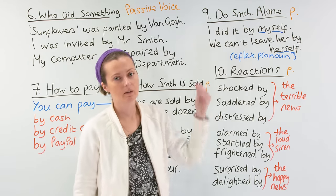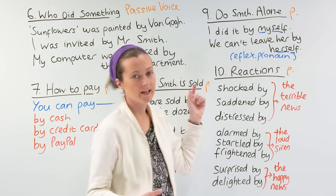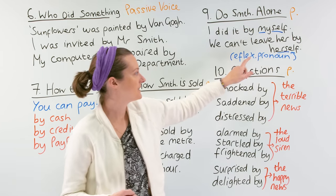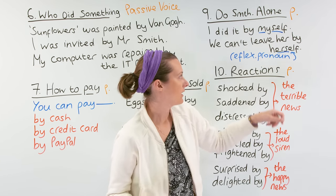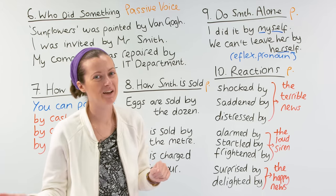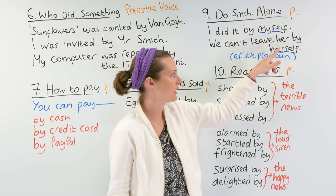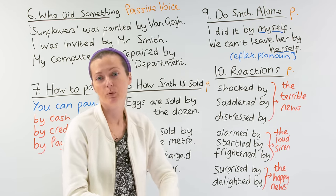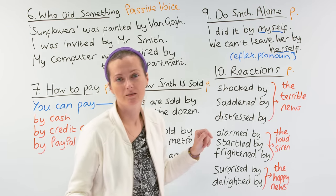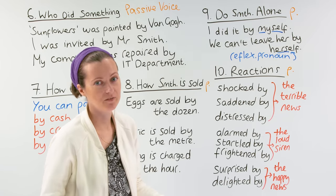The next example is when we do something alone. 'I did it by myself' — just me, alone. 'Myself' is a reflexive pronoun. If you want to know more about reflexive pronouns, Rebecca has made a really good video on these — you can pause, go watch that, and come back. Another example: 'We can't leave her by herself.' Perhaps you have a small child — her parents might say, 'We can't come to the party this evening because we can't leave her by herself.' She's too young to be left without a babysitter.